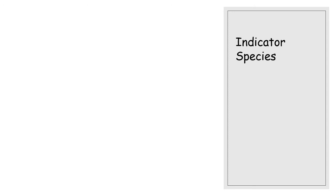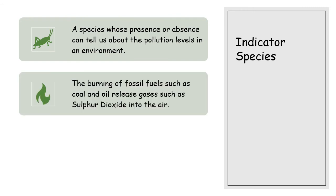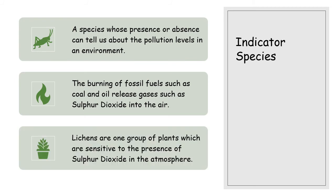In biology we can use some organisms as what's known as an indicator species. An indicator species is an organism whose presence or absence can tell us about pollution levels in an environment. For instance, the burning of fossil fuels — coal and oil — releases sulfur dioxide into the air, and that sulfur dioxide will then impact on what lives within that local environment. One thing we use very often in biology is lichens — a group of plants that are sensitive to the presence of sulfur dioxide.